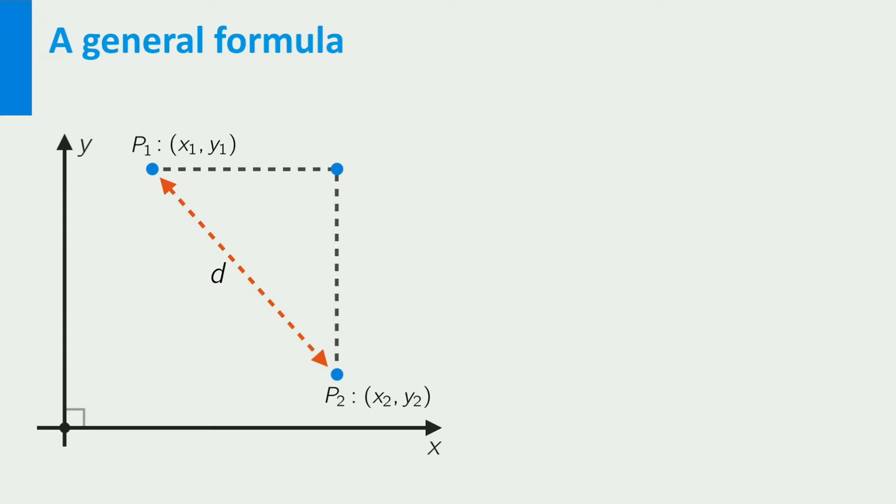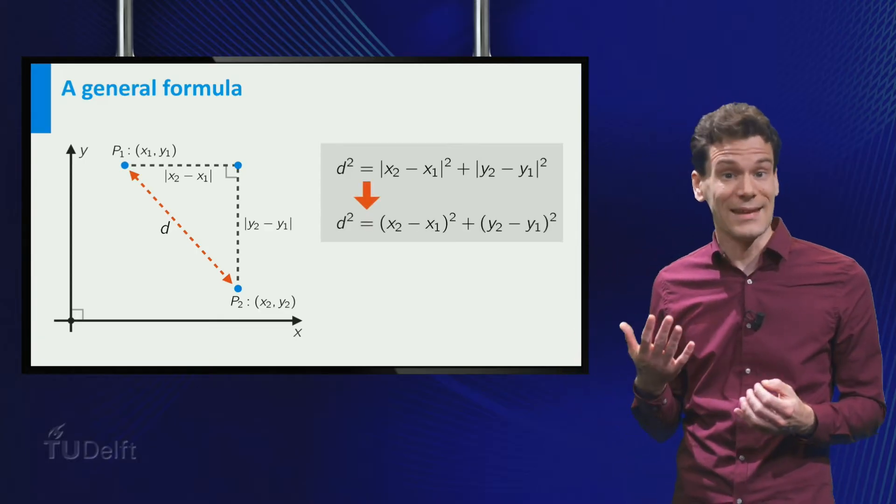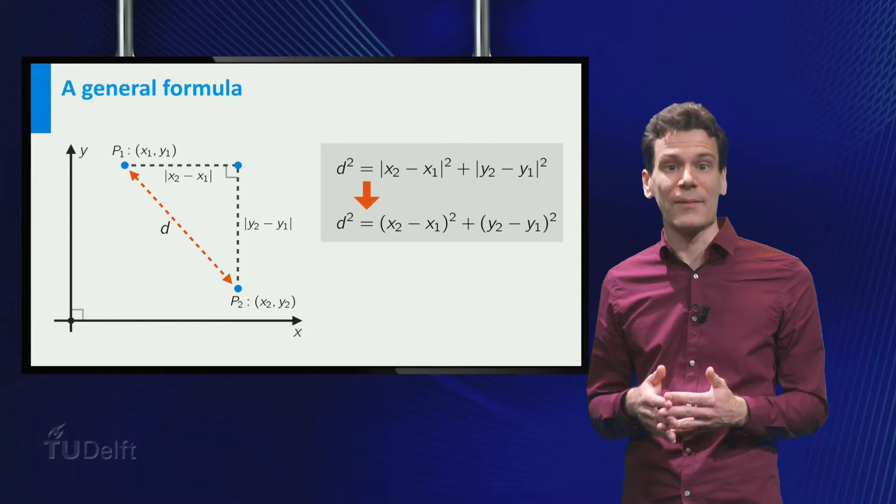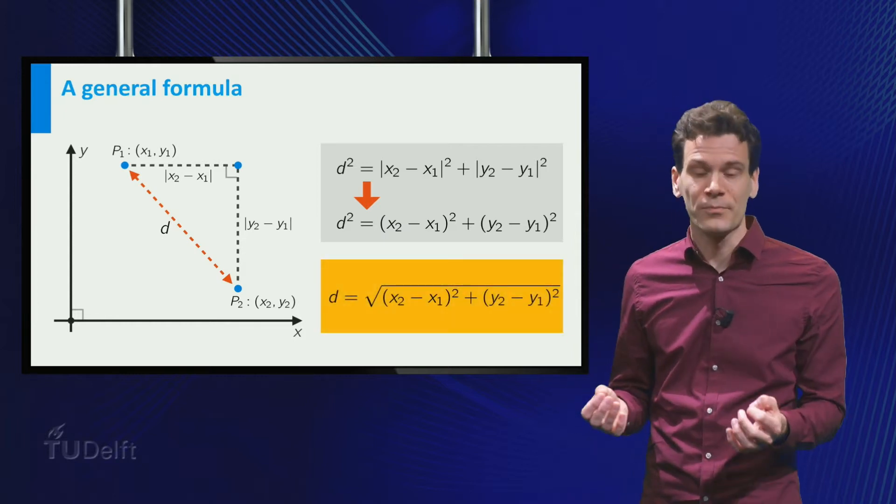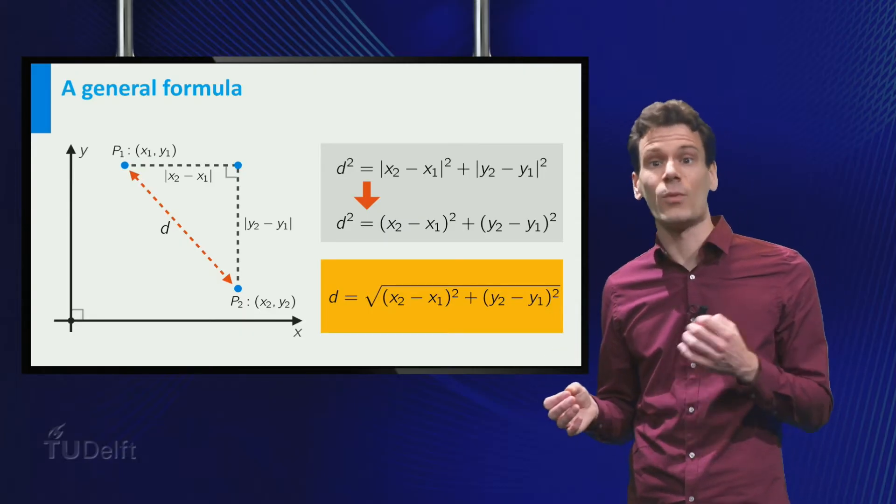The length of the first part is given by the absolute value of the change in x-coordinate. Note that we need the absolute value since distances cannot be negative. In the same way, we find the length of the second part. Once again, you see that the two parts of the path form a right triangle and d is precisely the length of the hypotenuse. So, we use the Pythagorean theorem to find d. Note that we can omit the absolute value signs because of the squares. And in the end, we find the following formula. The distance from p1 to p2 equals the square root of (x2 - x1)² plus (y2 - y1)².